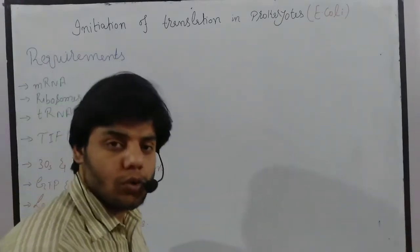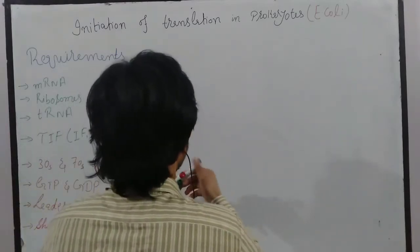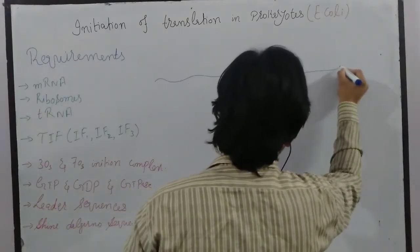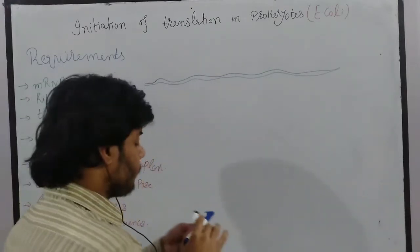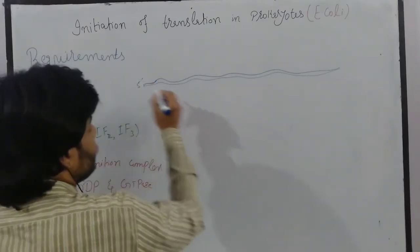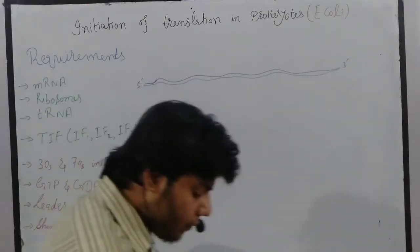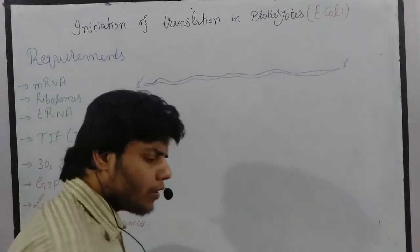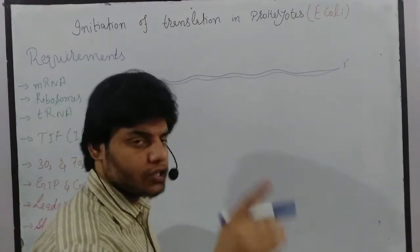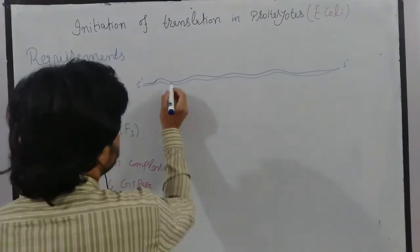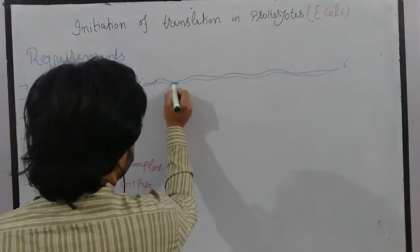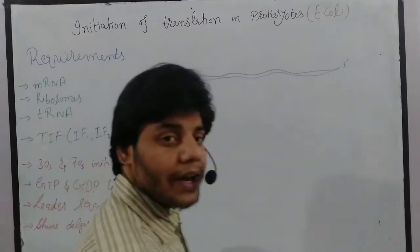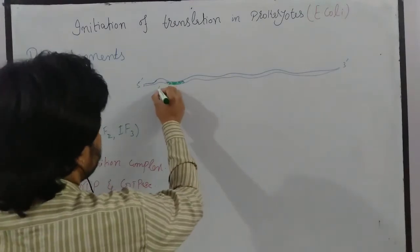Now let's discuss the mechanism. Let me draw the messenger RNA. Messenger RNA has a 5' to 3' end. At a specific position near the 5' end there are some specific sequences called leader sequences, and here I'll also draw the start codon and stop codon.